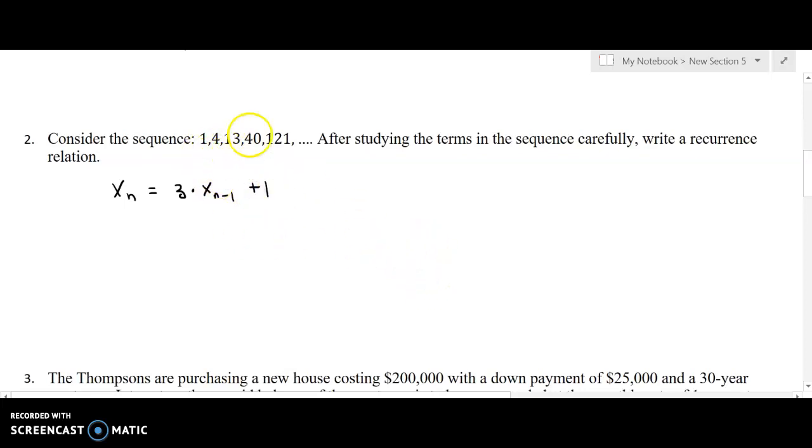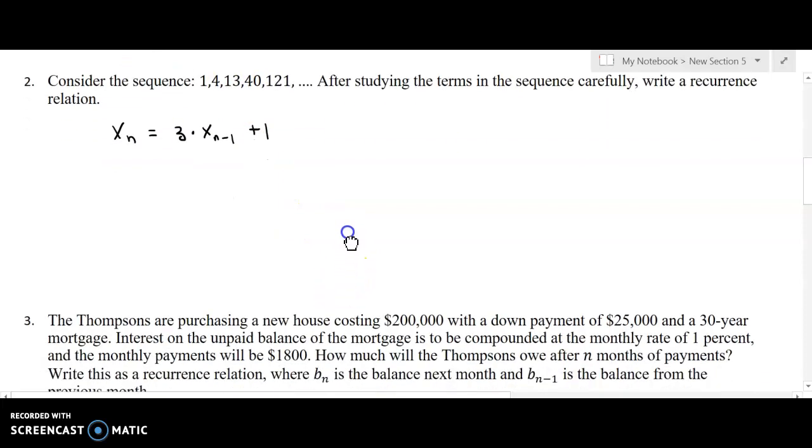And again, we could just double check this. We could see that if I put in 3 times 40 to get the next term, 3 times 40 is 120 plus 1 is 121. So that's an example of actually writing out the sequence.